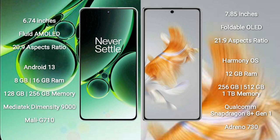OnePlus Nord 3 comes with 8GB or 16GB RAM and 128GB or 256GB internal storage. It features a MediaTek Dimensity 9000 processor and Mali-G710 GPU.